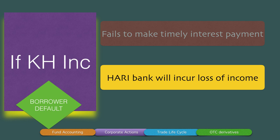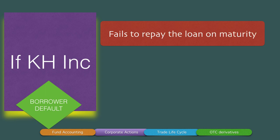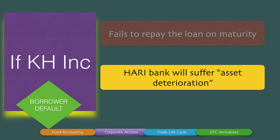The bank earns most of its income through interest on loans disbursed. So if KH Inc as a borrower does not make that interest payment, then Hari Bank will suffer a loss of income — the revenues of the bank will fall. If KH Inc fails to repay the loan on maturity, then Hari Bank will suffer an asset deterioration. The size of the asset reduces to the extent that KH Inc has not been able to pay, and this is called bad debts. The balance sheet of the bank will reduce to that extent. This is an example of a borrower default.